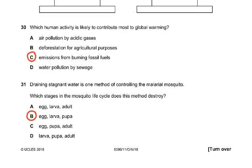Question 30: Which human activity is likely to contribute most to global warming? In global warming we have more greenhouse gases — carbon dioxide, sulfur dioxide, oxides of nitrogen. Emissions from burning fossil fuels was the only correct answer. Air pollution by acidic gases does not cause global warming; it is carbon dioxide and methane that reflect back heat rays and result in global warming.